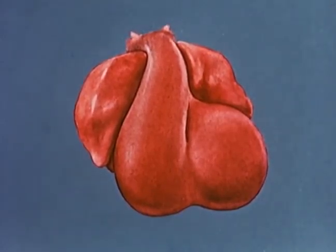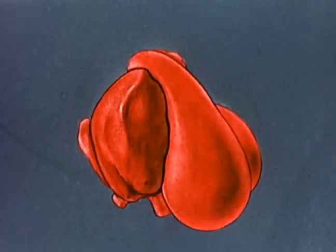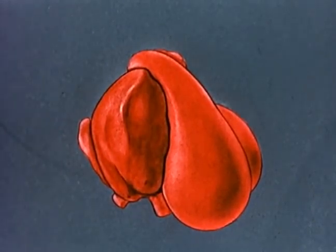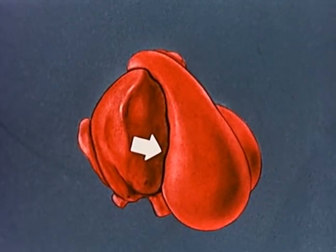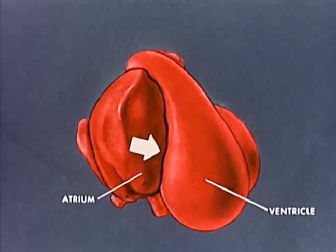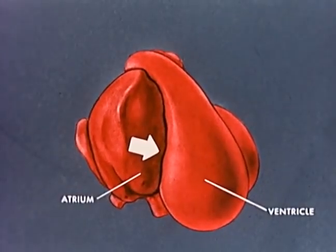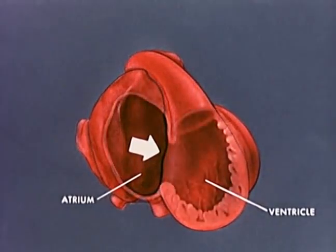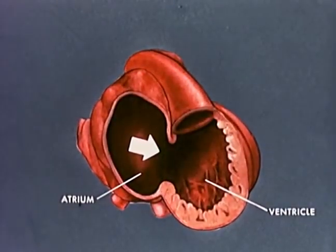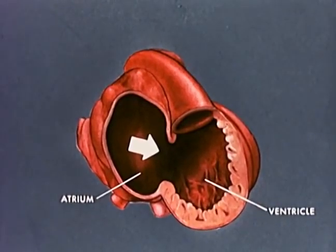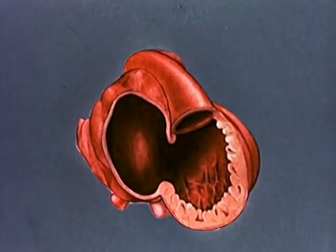Although these septa develop simultaneously, they will be considered individually. By viewing the heart from the right side, partitioning of the atria and ventricles can be more easily visualized. Externally, a deep groove separates the atrium from the ventricle. Within the heart, the atrioventricular groove appears as a deep invagination which constricts the atrioventricular canal at its waist.